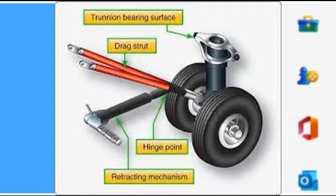Trunnion of Landing Gear. At the top of the outer cylinder is the trunnion. This is the point at which the landing gear is attached to the aircraft structure. It is also the pivot point for extending and retracting the landing gear.